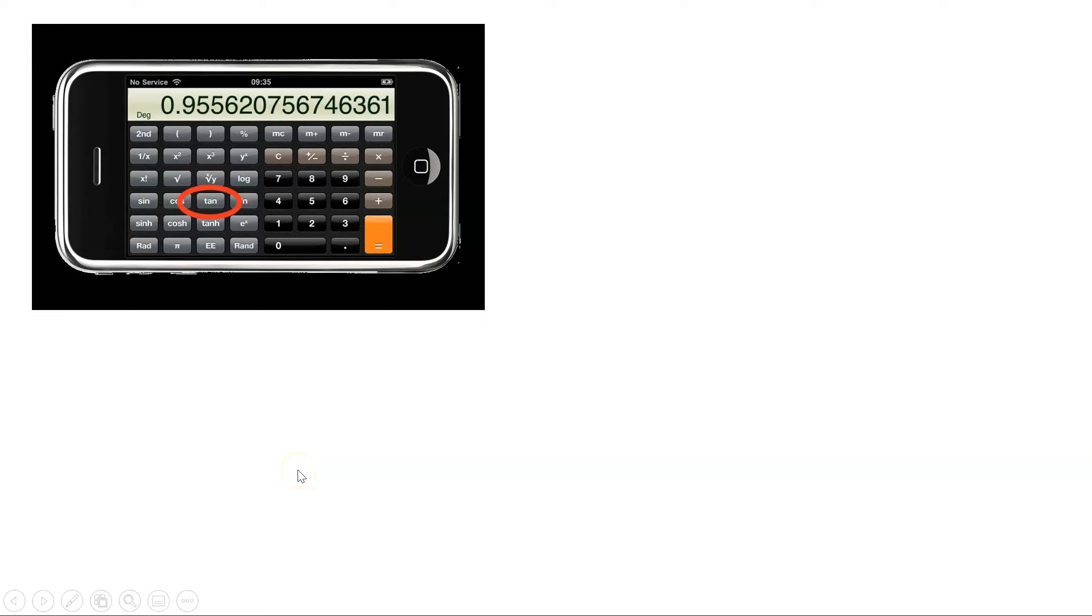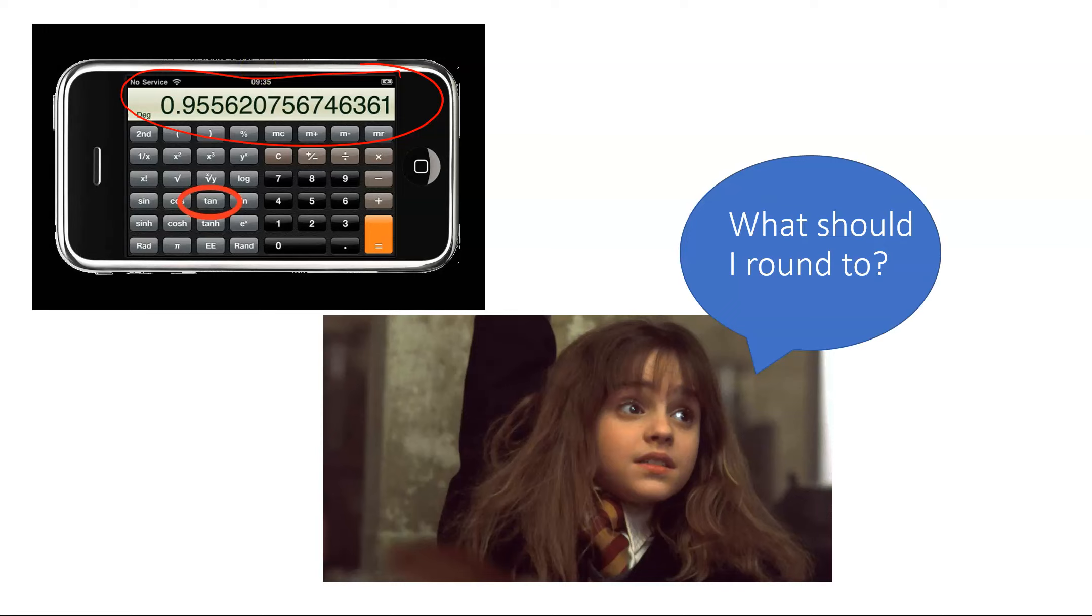First of all, let's say on your calculator you run a calculation and that calculation spits out a big long number like that one. One of the things you're going to ask me is what should I round that to? Do I need to write all of those numbers? Is it appropriate for me to do that? And if not, where do I round and how do I decide what that number ought to look like when I write my answer on paper?